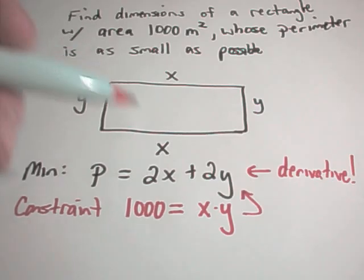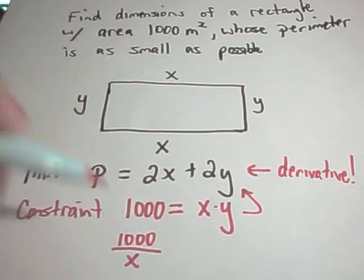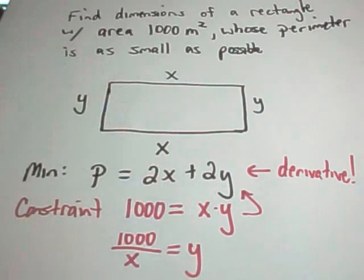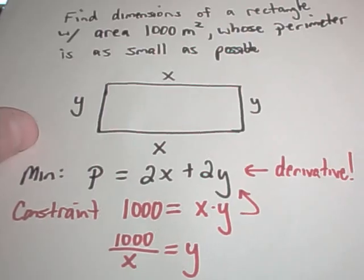I'm going to use this constraint to plug this back in so that I can get the thing that I'm going to take the derivative of down to a single variable. I could simply divide both sides by X and get that Y is equal to 1000 divided by X.